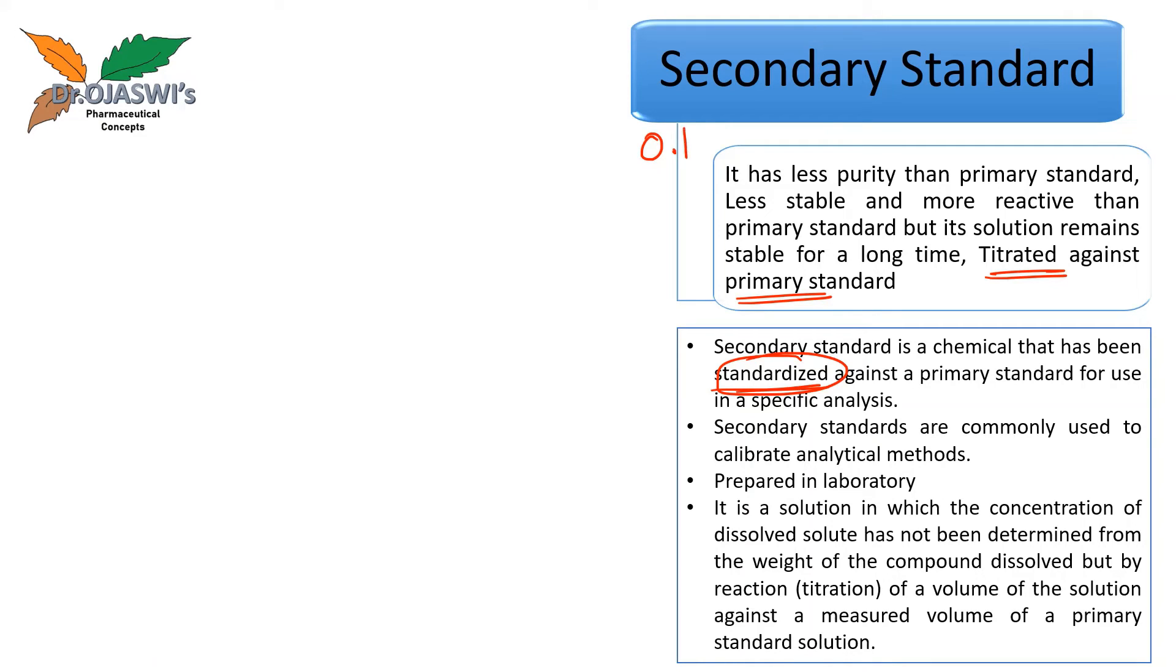This secondary standard, for example, if I have weighed or if I have prepared a 0.1 molar NaOH, which is the secondary standard, whether its molarity is really 0.1 molar or not. If I have prepared this sodium hydroxide 0.1 molar today morning, by today evening, if it is really 0.1 molar, that I have to check by titrating this against the primary standard. And then only I can use this 0.1 molar NaOH for the other reactions in some other experiment.